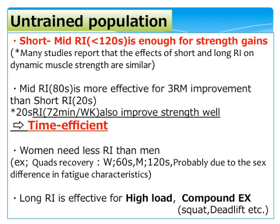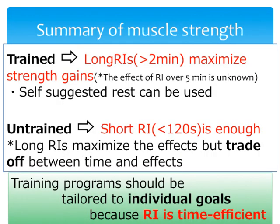Regarding gender differences, women need only half the interval duration of men because of differences in fatigue. Longer interval duration also works well for untrained individuals doing high-intensity training in compound exercises such as bench press, squat, and deadlift. To summarize: for trained individuals, longer than 2 minutes of rest maximizes the effect on strength improvements. However, it is unclear whether longer than 5 minutes provides additional benefit. Trained individuals can use self-suggested rest intervals, but this is not strongly recommended.